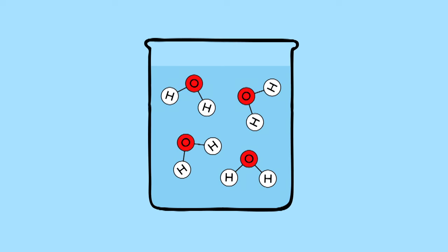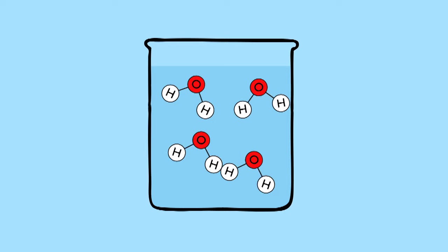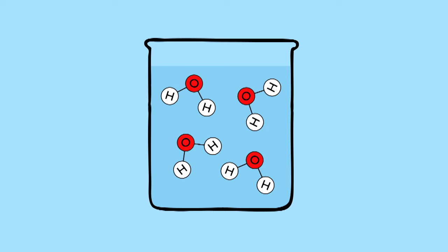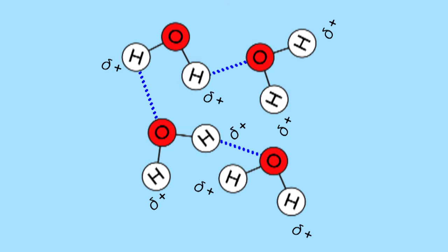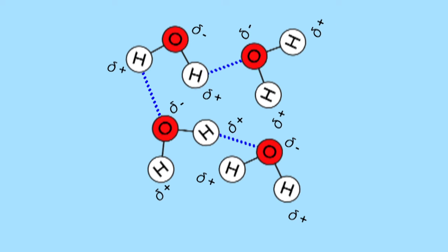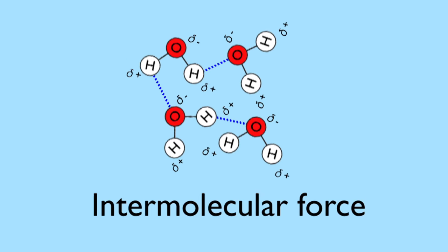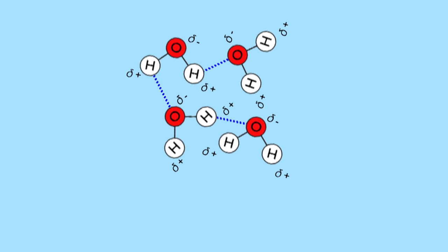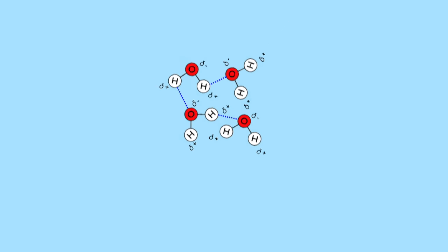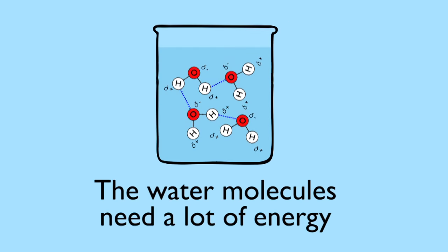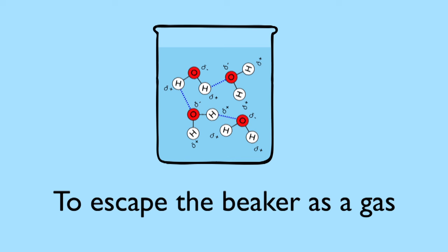Imagine a bunch of water molecules in a beaker. They are in liquid form, so can move around each other. But the delta-positive hydrogens from one molecule are weakly attracted to the delta-negative oxygen of another. This is a type of intermolecular force, and it has a special name: hydrogen bonding. Because of this, the water molecules need quite a bit of energy to overcome the hydrogen bonds and escape from the beaker as a gas.